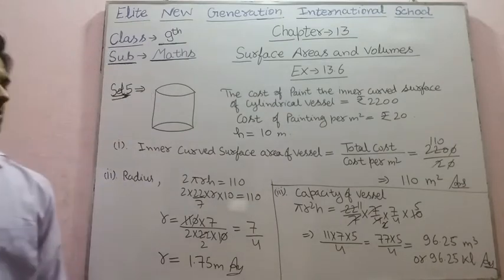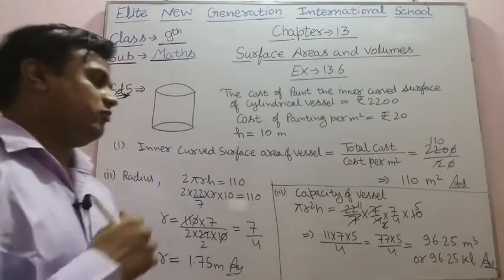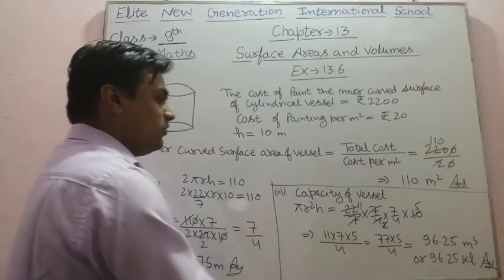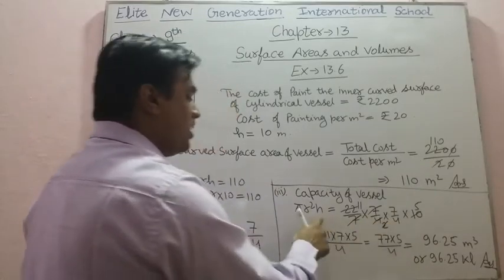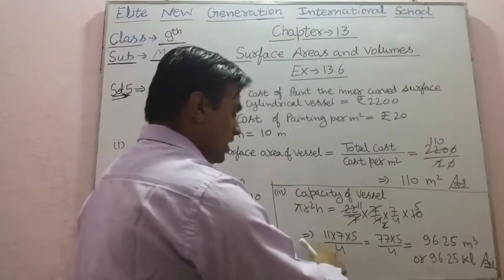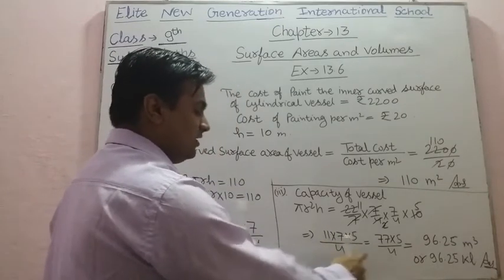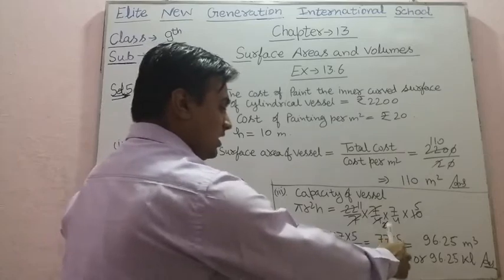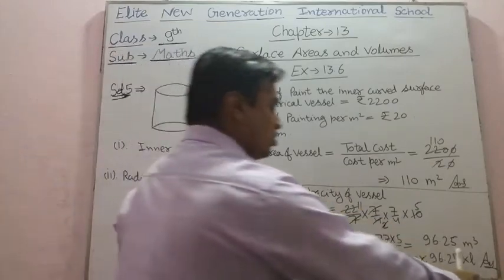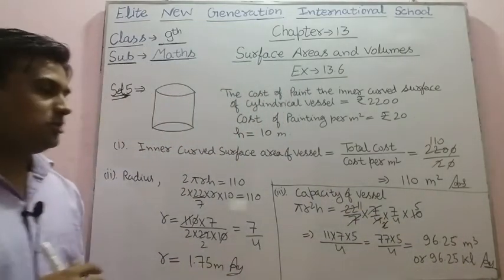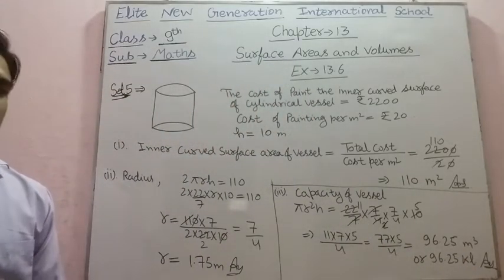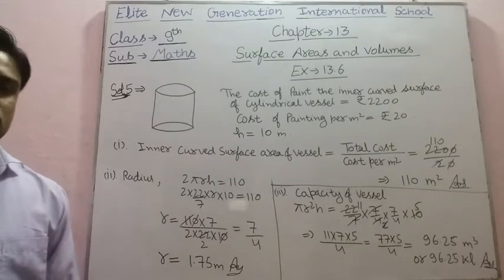In the third part, we find the capacity, which means volume of the cylinder: πr²h. Putting values: (22/7) × (7/4) × (7/4) × 10. Solving: 11 × 7 × 5 / 4 = 77 × 5 / 4 = 96.25 meter cube. Since 1 meter cube equals 1 kiloliter, the capacity is 96.25 kiloliters.